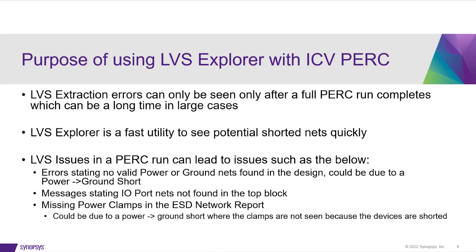Issues in a PERC run that are caused by LVS shorted nets can manifest as errors stating there's no valid power or ground nets found in the design, which could be due to a power-ground short; messages stating that the IO port nets are not found in the top block; or if your run completes, you could see missing power clamps in the ESD network report. This could be due to a power-ground short where the clamps were not seen because the devices themselves were shorted.